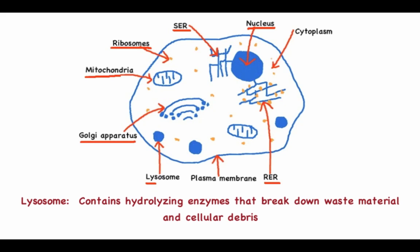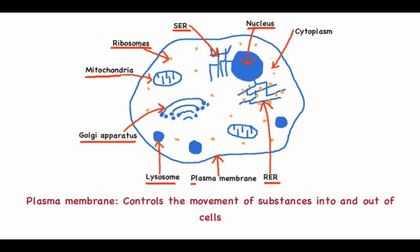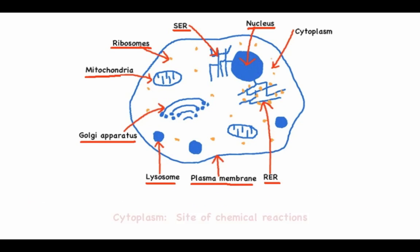The lysosomes contain hydrolyzing enzymes that break down waste material and cellular debris. Then you have the plasma membrane which, as in a prokaryote, controls the movement of substances into and out of a cell. And also as in a prokaryote, the cytoplasm is the site of chemical reactions.